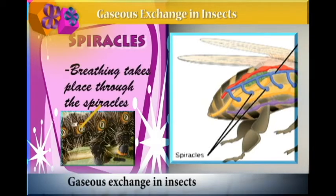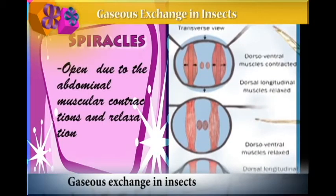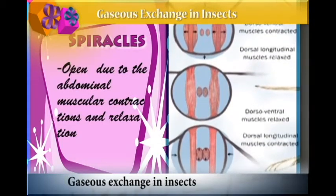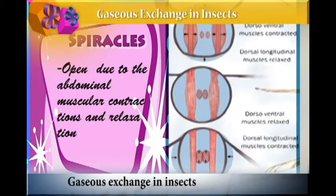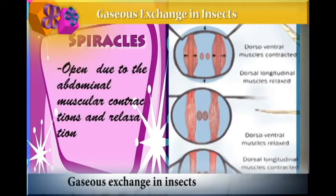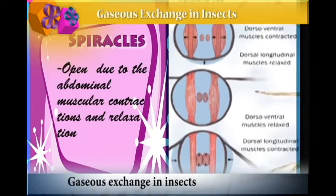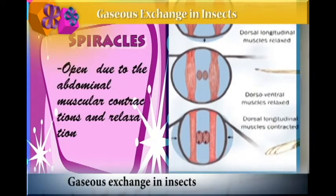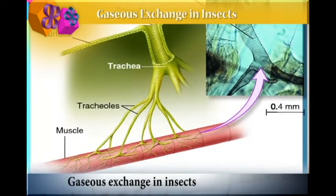Gaseous exchange occurs through the spiracles, and the spiracles open due to abdominal muscle contraction and relaxation. When the muscles of the abdomen relax, the pressure inside decreases, and when they contract, the pressure increases.